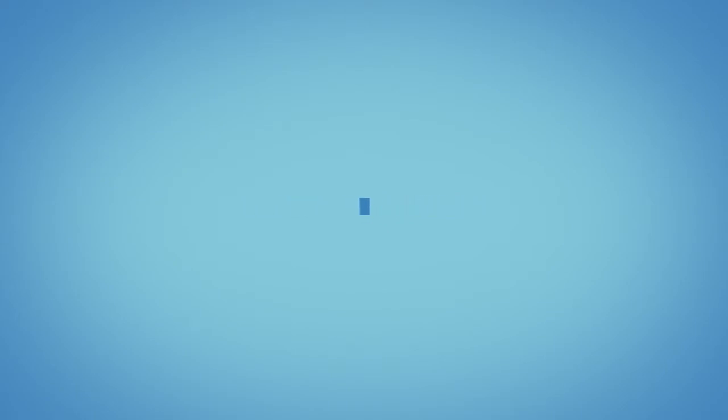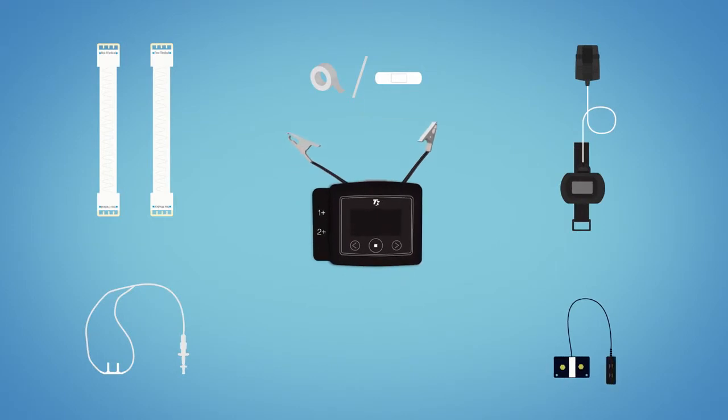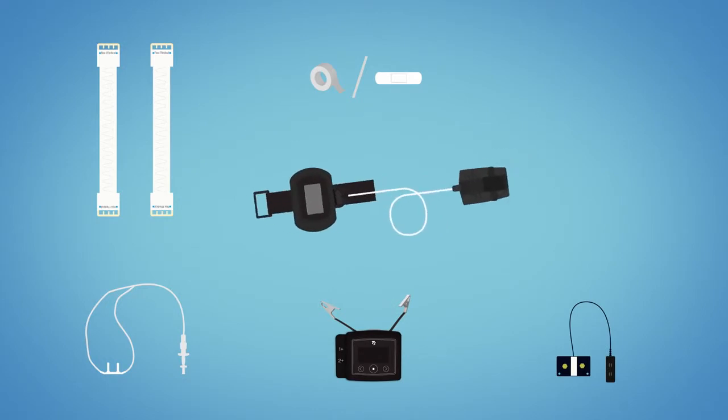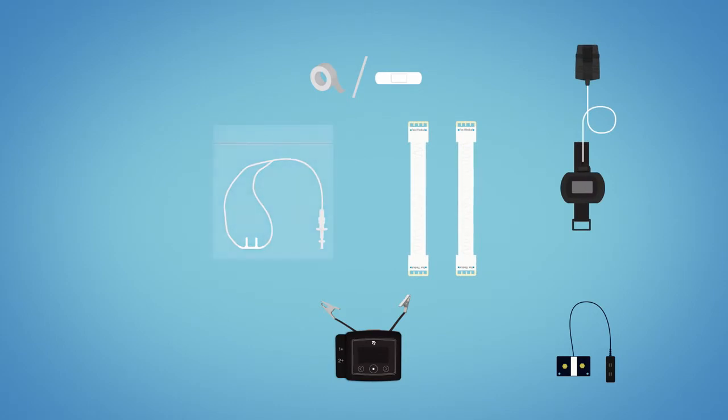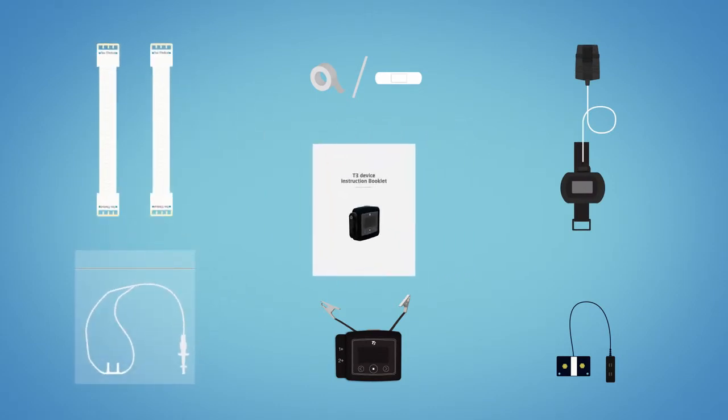Unpacking your kit. When you receive your home sleep testing kit, please check the kit contents to ensure you've received all the necessary parts. The contents include the T3 home sleep testing device with the abdomen cable attached, the wrist oximeter and velcro strap with the oximeter probe attached, two belts and a nasal cannula in a sealed plastic bag, and an instruction booklet. Your kit may also contain tape or band-aids to help secure some of the sensors.